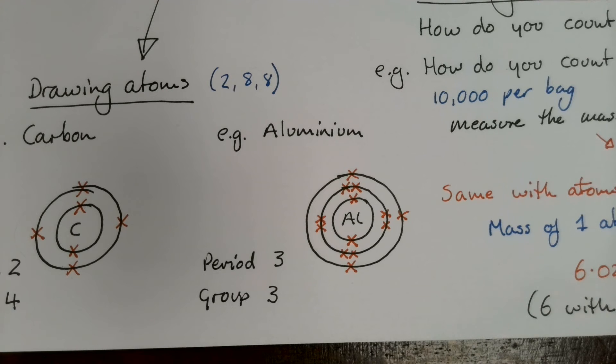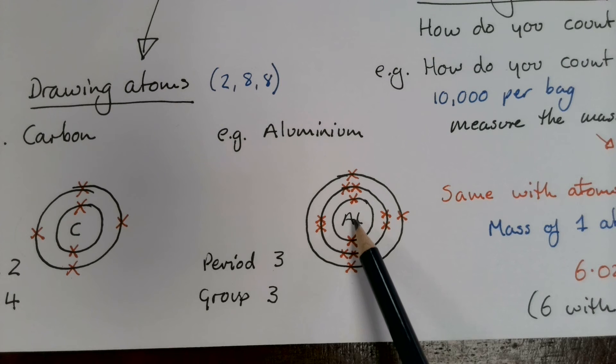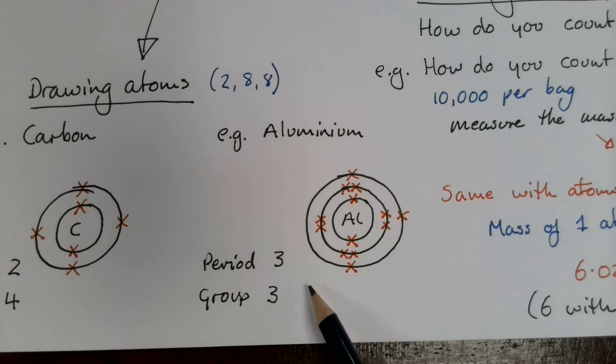Let's look at another example. This time we've got aluminium. So we've got more electrons to deal with this time. To draw aluminium, first of all we need to know how many shells to draw. Well, we look at what period it's in. It's in period three. So we draw one, two, three circles. Notice I haven't drawn the nucleus this time. I've just written the letters of the element in the centre.